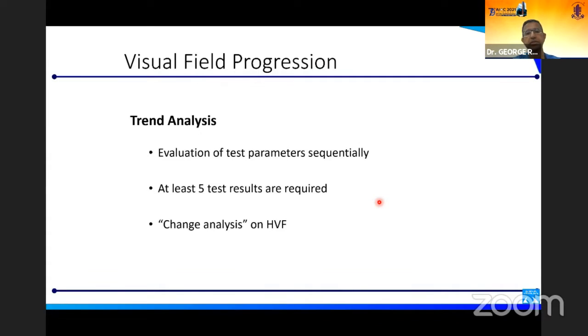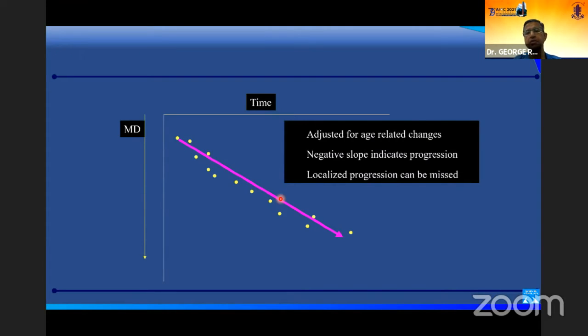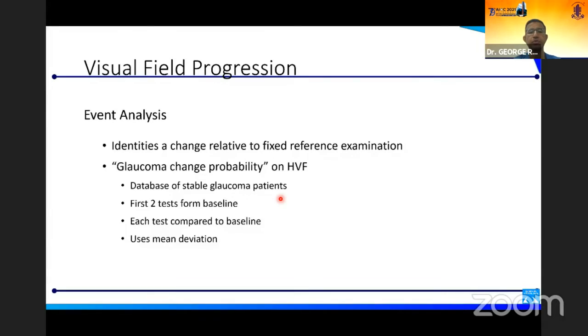There are two basic ways of doing it. One is trend analysis, where you're looking at the mean deviation or the visual field index or the pattern standard deviation over time. You're seeing what happens with time, and then you're applying mathematical regression to it to see whether this is statistically significant. This is usually adjusted for age-related changes. If you have a negative slope or a minus sign, it indicates progression. The problem with this technique is that you can miss localized progression.